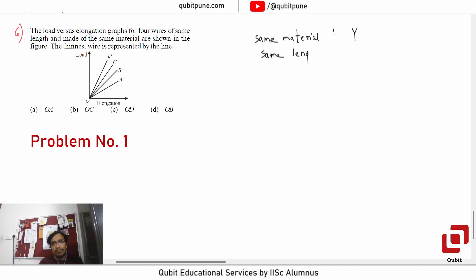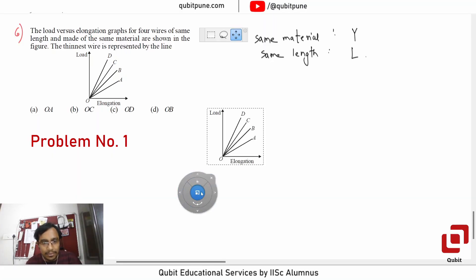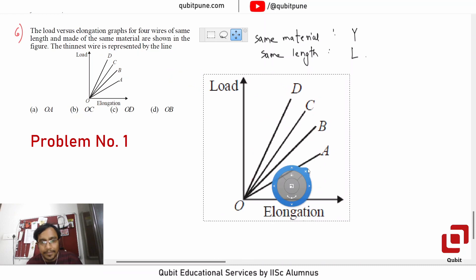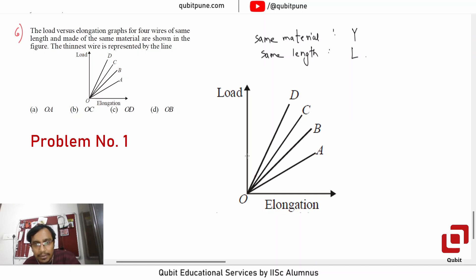Let us say we take the same load. Now what can we say about these wires? For same load, which one is producing the maximum elongation? That wire will produce max.